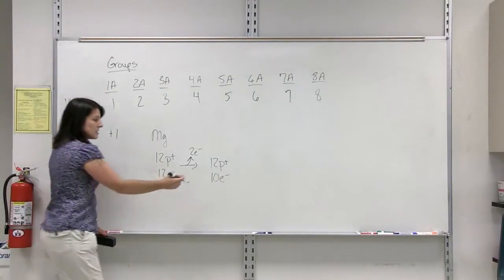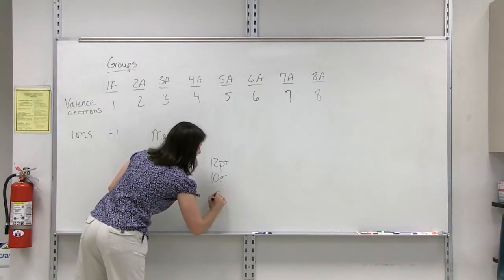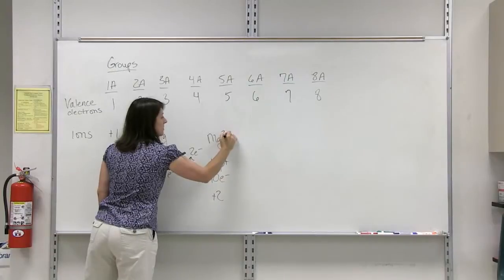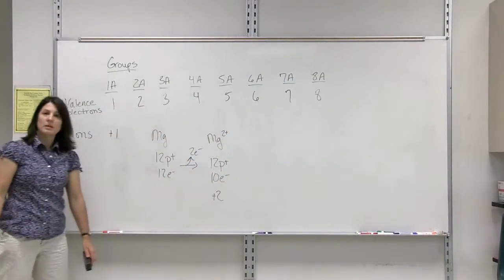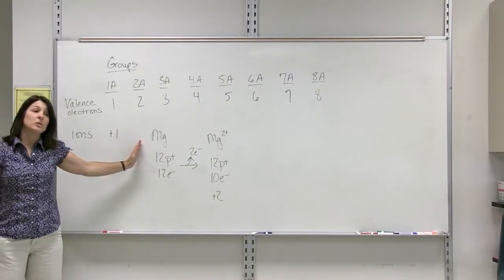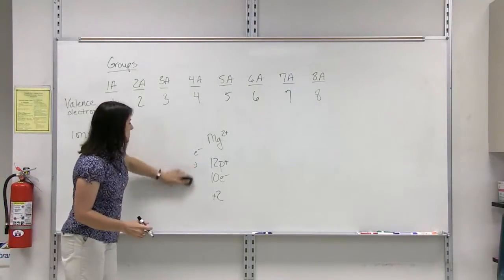But now we only have 10 electrons. Since there are two more positives than negatives, it has a plus 2 charge. And we would write the symbol as magnesium 2 plus. Everything in group 2A is going to do the same thing. They are going to lose their two valence electrons and form a 2 plus ion.